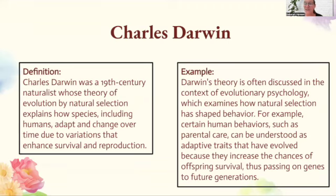Darwin's theory is often discussed in the context of evolutionary psychology, which examines how natural selection has shaped behavior. For example, certain human behaviors such as parental care can be understood as adaptive traits that have evolved because they increase the chances of offspring survival, thus passing on genes to future generations.